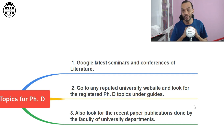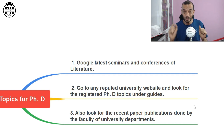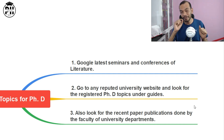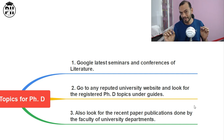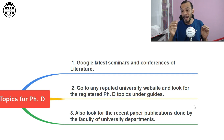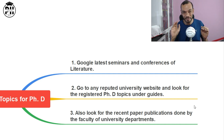The second thing is to go to any reputed university sites and look for the registered PhD students. You can find it under any university — it is mandatory. Once you go through the list of those who have registered, you can get a pattern again of what the students are doing in that field.